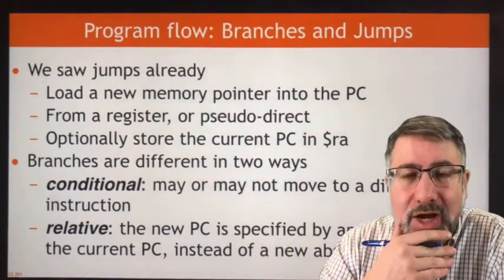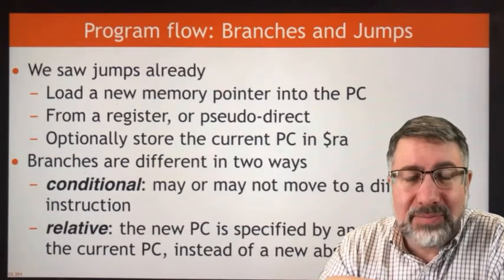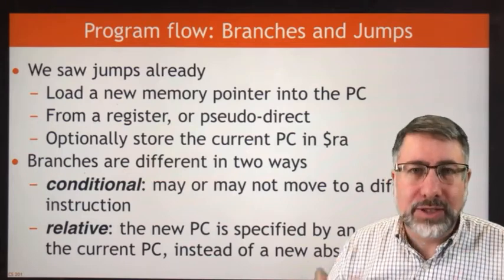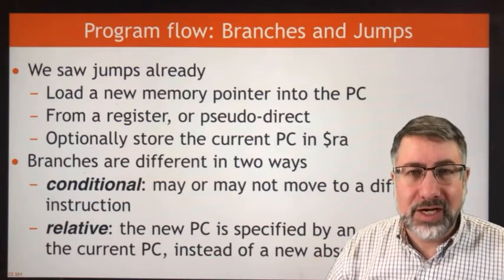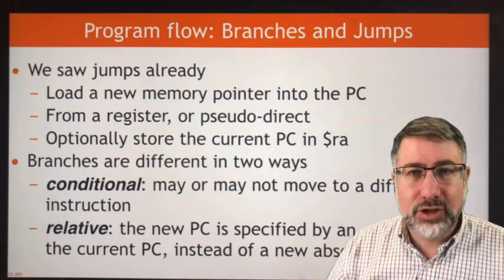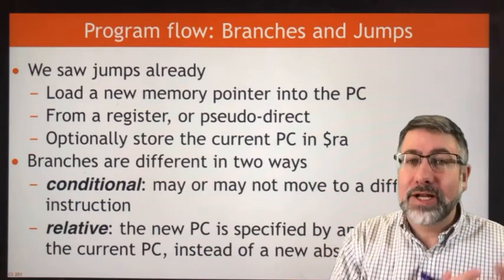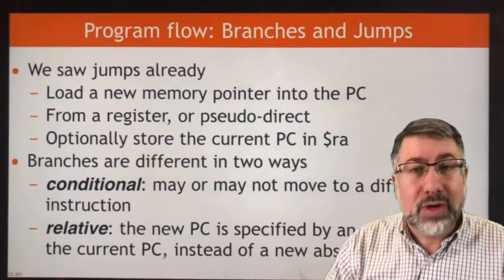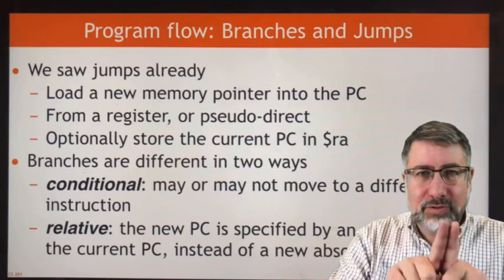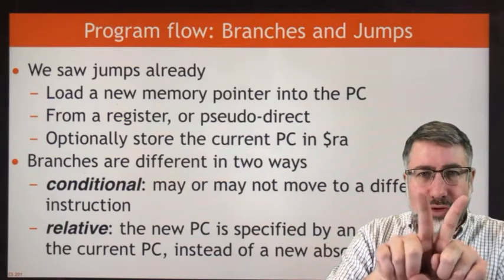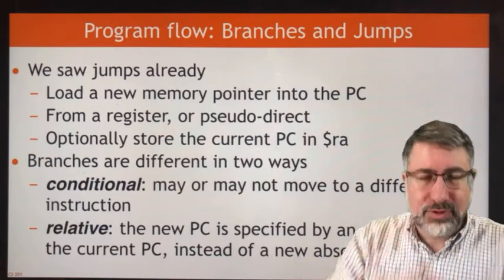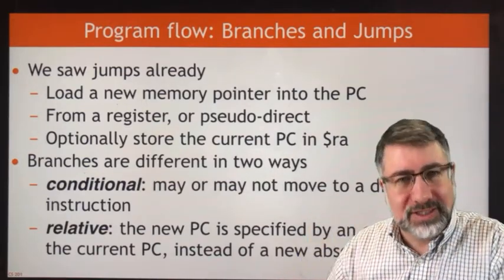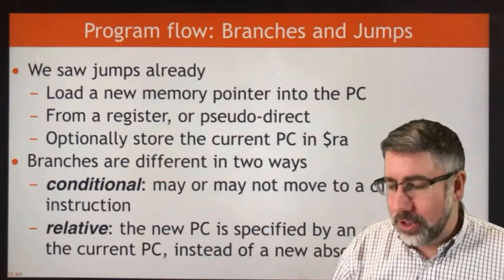But branches are different. Branches are different because they're relative to the program counter and because they are conditional. Conditional means you're not always loading a new value into the program counter — sometimes the program counter just keeps its current value. If the branch fails, the program counter keeps its value. If the branch succeeds, the program counter gets a new value. This is why we call it a branch: your program flow is going along and then you have two possibilities. If a condition is true, you do this; otherwise you skip it and do something else instead.